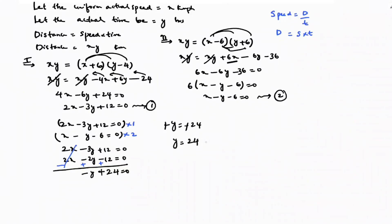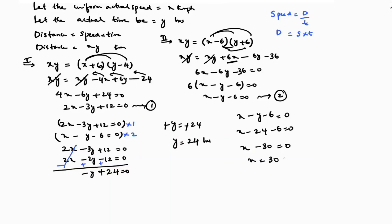Y is the actual time, which is 24 hours. Now we need to find x. Substituting y = 24 into Equation 2: x - y - 6 = 0 gives x - 24 - 6 = 0, so x - 30 = 0, therefore x equals 30 kilometers per hour.